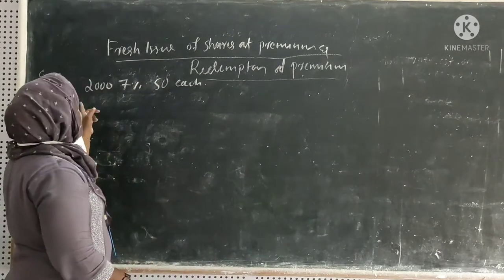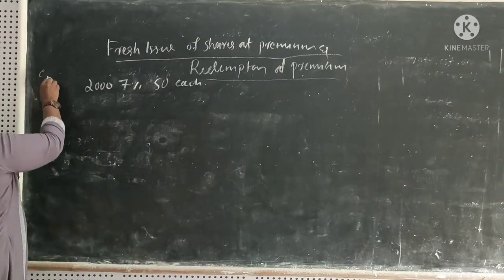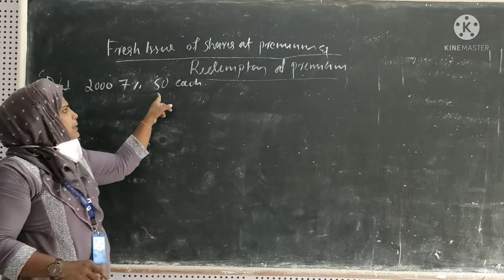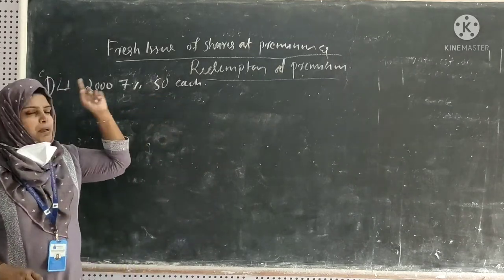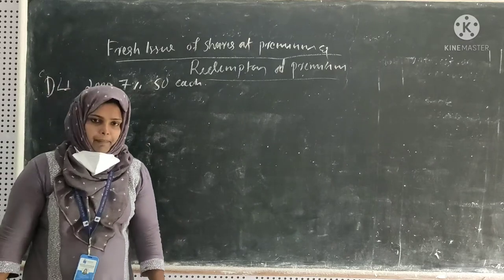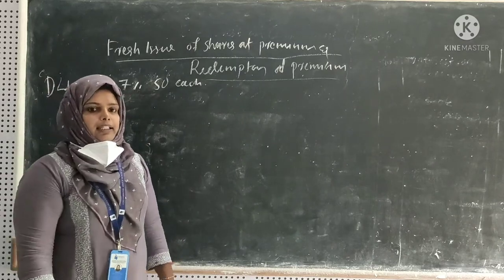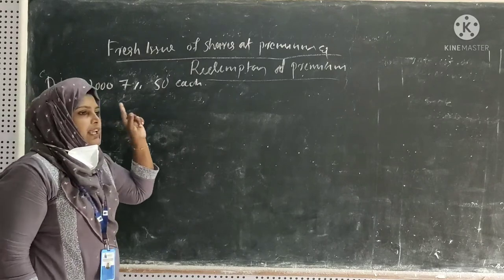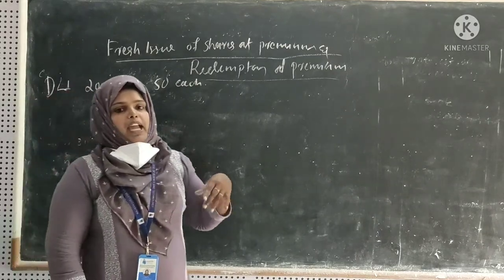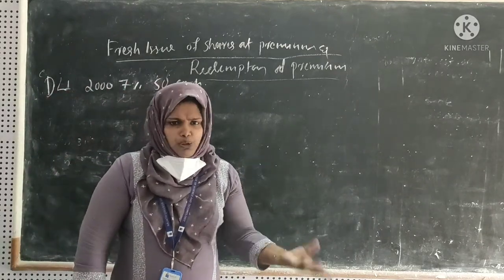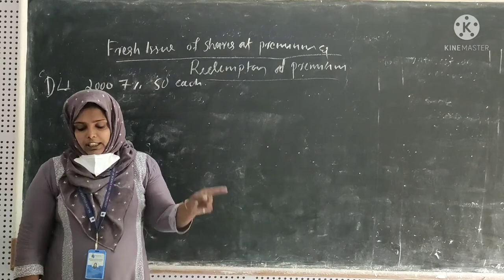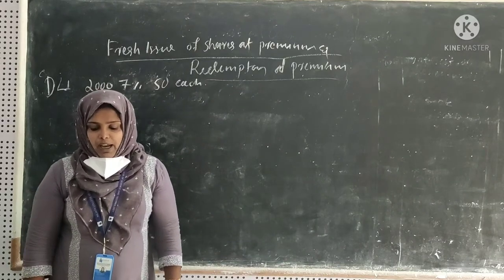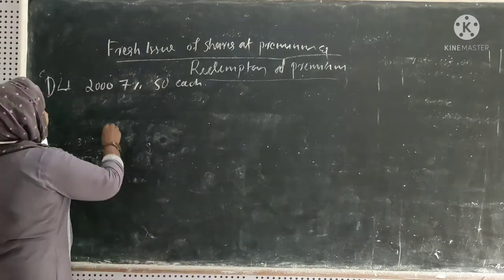D Limited. Our company has 2,007 percentage preferred shares of rupees 50 each, fully paid up. That is the 90% paid preferred shares. The company decided to redeem these shares at 5% premium.